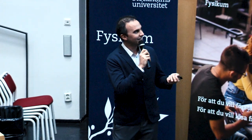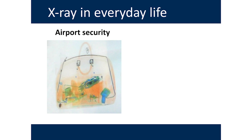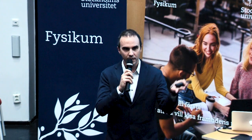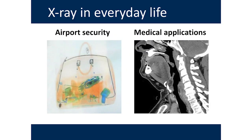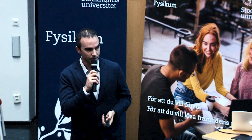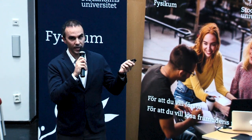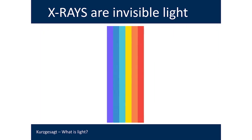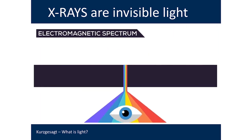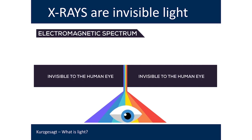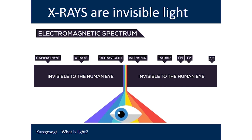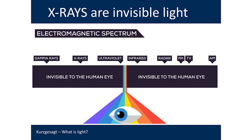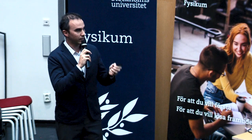X-rays are something we experience in everyday life. For example, when you go to the airport, they use X-rays to check your bag through security. When you go to the hospital or to the dentist, they use X-rays to look through your skin and examine your bones. X-rays are also a form of light — some kind of invisible light. If you look at the electromagnetic spectrum, a big part of it is actually invisible to the human eye. The visible part is only a small portion. The rest consists of gamma rays, X-rays, and ultraviolet on the left side, and infrared, radar, FM, and longer wavelengths used for television and radio on the right.